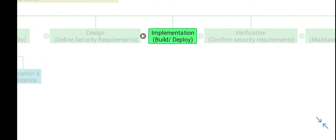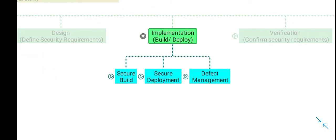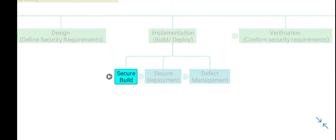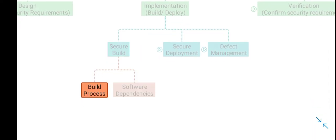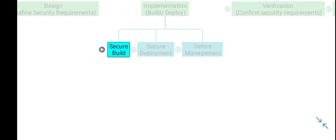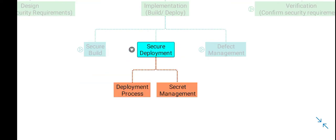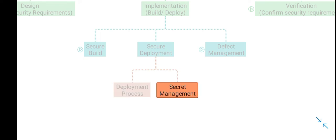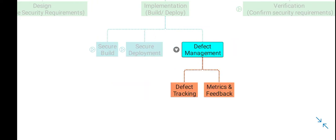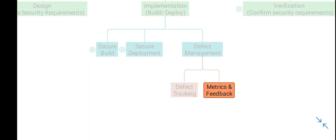After the design phase comes Implementation, where you build and deploy the application. The security practices include ensuring the secure build of an application — its processes and different software dependencies — and ensuring the secure deployment of the software. You also manage any secret data, and perform defect management where you track different software-related bugs and develop metrics to get feedback related to these defects.